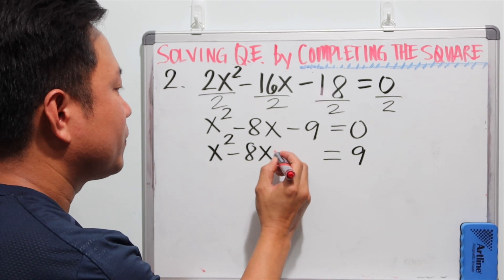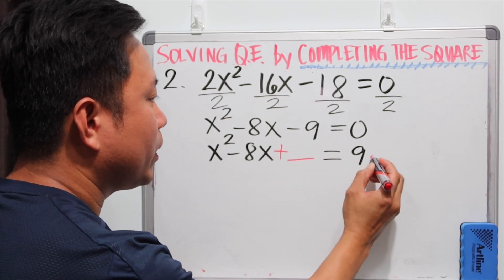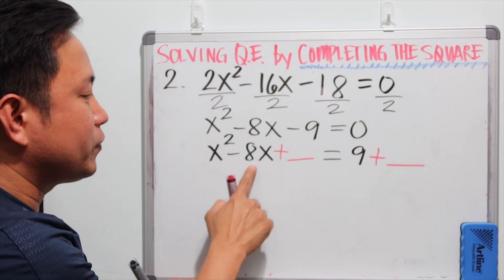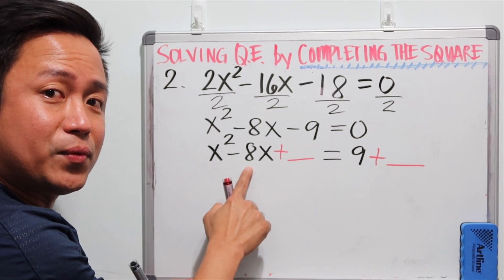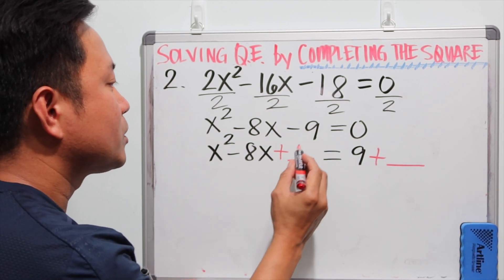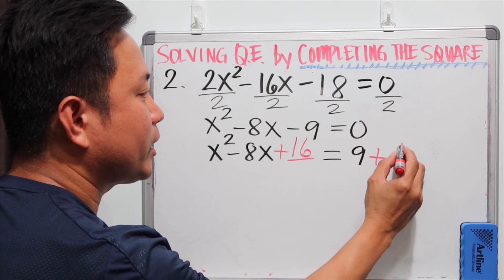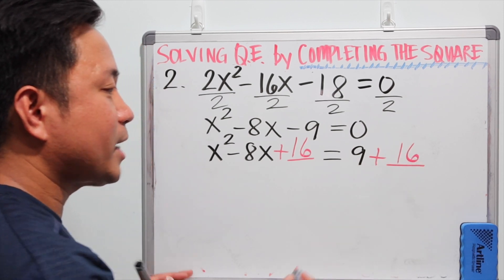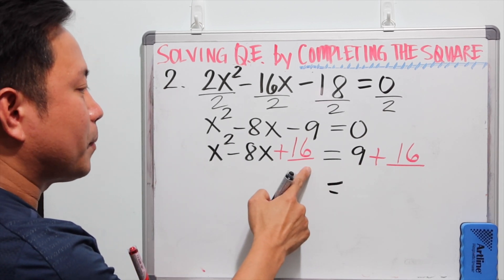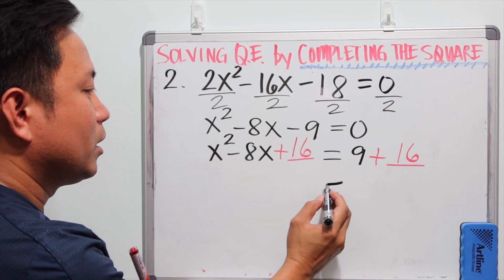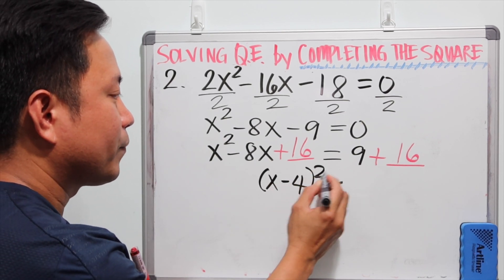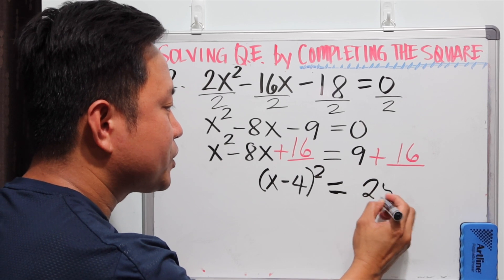To complete the square, we need to get half of negative 8, which is negative 4, and then square negative 4, that's 16. So we need to add 16 to both the left and right sides of the equation to maintain equality. The left side is always a perfect square trinomial, so this can be factored out as x minus 4 to the second power. The right side is 25.